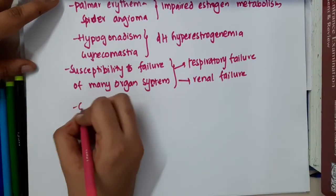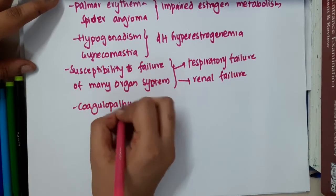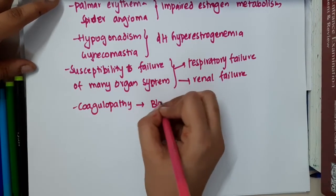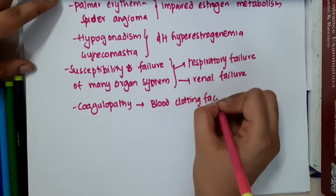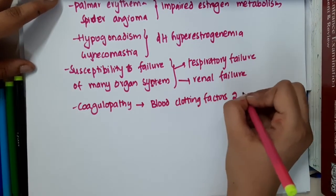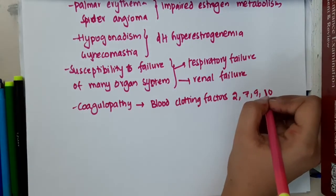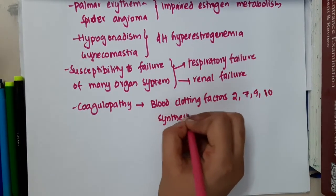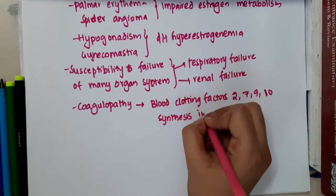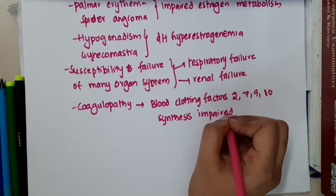Then there will be coagulopathy. In the coagulopathy, this is mainly attributed to blood clotting factors. It is seen mainly due to blood clotting factors like 2, 7, 9, 10. Synthesis is impaired because the synthesis of these occurs in liver. So the synthesis of these blood clotting factors are impaired, causing coagulopathy.